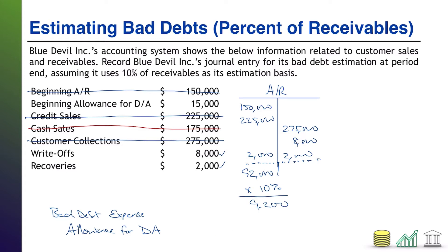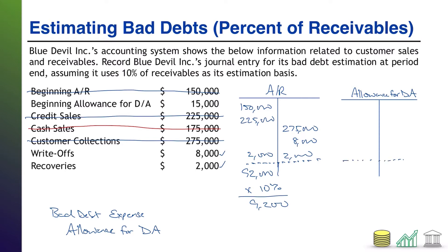Instead of using that $9,200 directly in my journal entry, I'm going to say: that's the allowance I need when the period's over. So just like I did with AR, I'm going to create a ledger — this ledger is for the allowance for doubtful accounts. I need that allowance to be at $9,200 at the end of the period. I put this on the credit side because allowance for doubtful accounts is a contra asset, and contra assets have credit balances. The question is: how much do I actually need to record in order to get to that $9,200 ending balance?